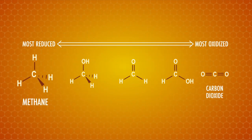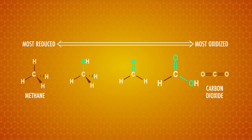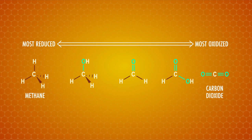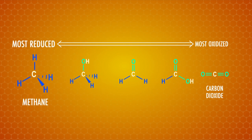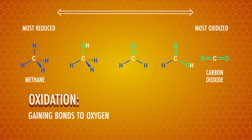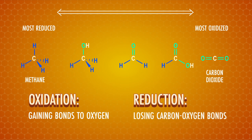For example, the molecule methane can be oxidized by replacing carbon-hydrogen bonds with carbon-oxygen bonds until we get carbon dioxide, the most oxidized form of a single carbon atom. On the flip side, carbon dioxide can be reduced by replacing oxygen atoms or carbon-oxygen bonds with hydrogen atoms. So we can also define oxidation as gaining bonds to oxygen, and reduction as losing carbon-oxygen bonds. In this episode, we'll consider the oxidation and reduction reactions of alkenes and see what types of oxygen-containing compounds we can make from alkenes.